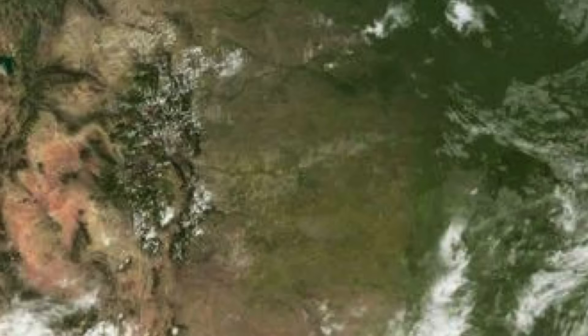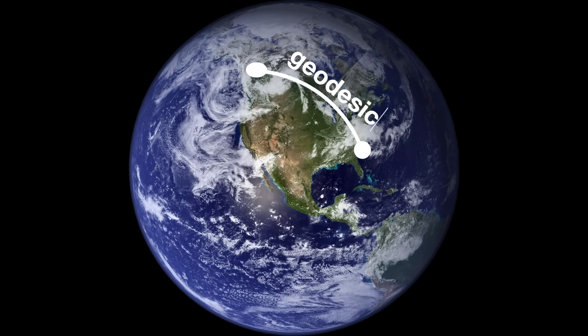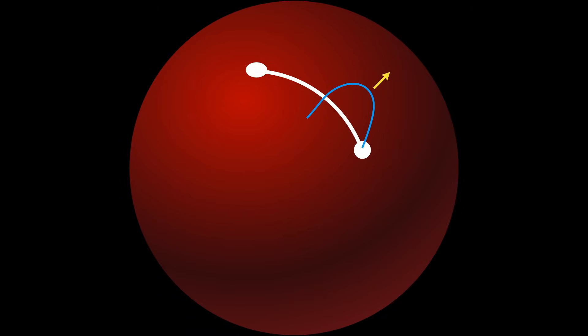In some sense, a geodesic is the locally shortest path between two points, like a straight line but in a curved space instead. It's the path a particle follows if no forces act on it except the shape of the space itself. So as you can imagine, it's very useful when trying to study the curvature of a space.